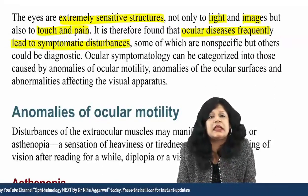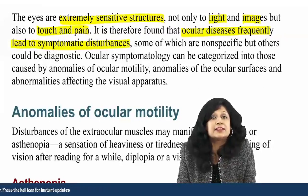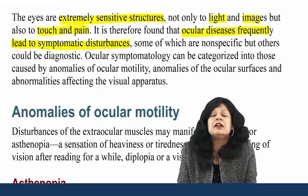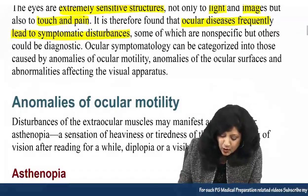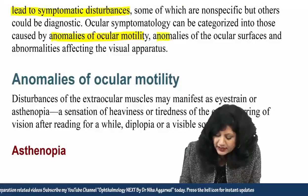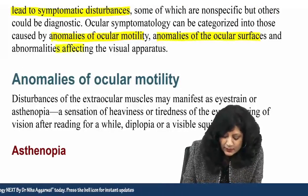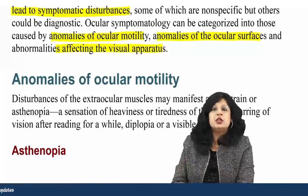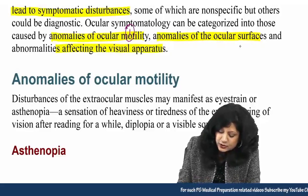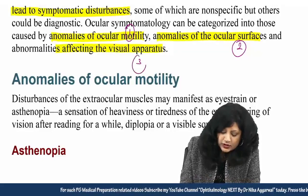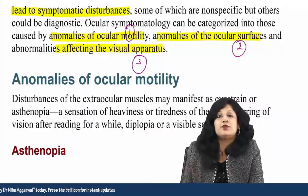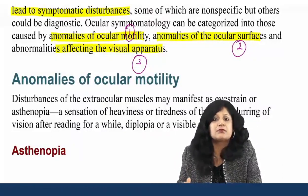More often than not, we are able to diagnose one of the important chronic diseases due to some manifestations in the eye. Ocular symptomatology can be categorized into those caused by anomalies of ocular motility, anomalies of the ocular surfaces, and abnormalities affecting the visual apparatus. They have tried to classify it into three forms: ocular motility, ocular surfaces, and visual apparatus — meaning the ophthalmology part responsible for neural control.